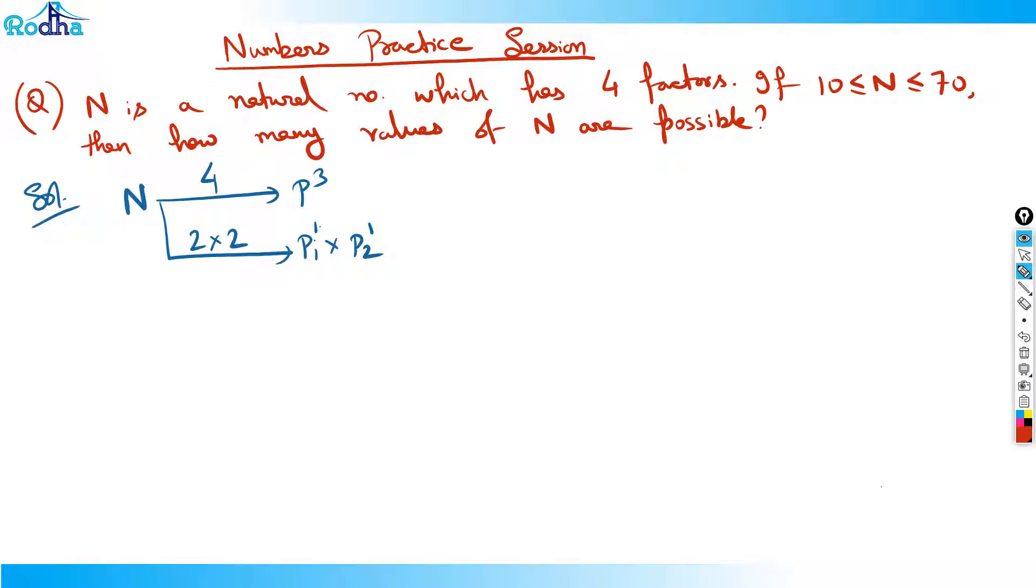So analyze this case guys actually. With P cube, I think, and between 10 to 70, I can have only one number possible, that is 3 cube. No other possible. Because 2 cube is 8, less than 10. 5 cube is 125, more than 70. So only one number possible.